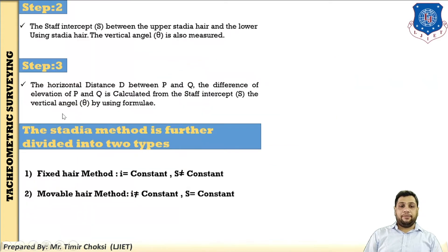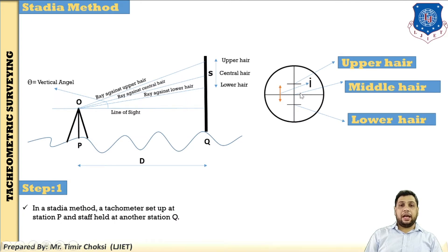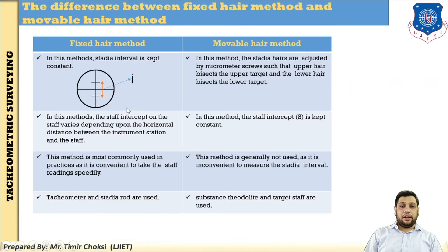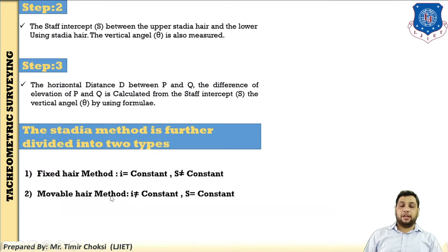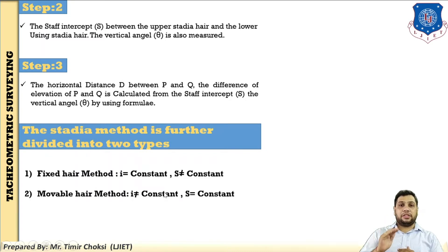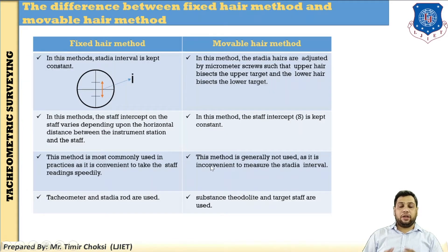In the fixed hair method, i equals constant — there is no single change in the stadia diagram — and S is variable. In the movable hair method, i is changed using the micrometer screw on the tachymeter. The stadia interval on the staff varies depending upon the horizontal distance between the instrument station and the staff. In the fixed hair method, the staff intercept S changes with varying distance between the staff station and the instrument station. In the movable hair method, the staff intercept S equals constant.